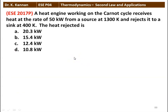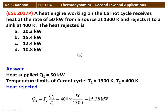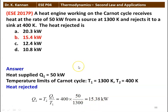Next question: a heat engine working on the Carnot cycle receives heat at the rate of 50 kilowatt from a source at 1300 Kelvin and rejects it to a sink at 400 Kelvin. The heat rejected is: 20.3 kW, 15.4 kW, 12.4 kW, or 10.8 kW. Heat supplied = 50 kW, T1 = 1300 K, T2 = 400 K. Heat rejected: Q2 = T2 × Q1 / T1 = 400 × 50 / 1300 = 15.38 kilowatt. The answer is 15.4 kilowatt.